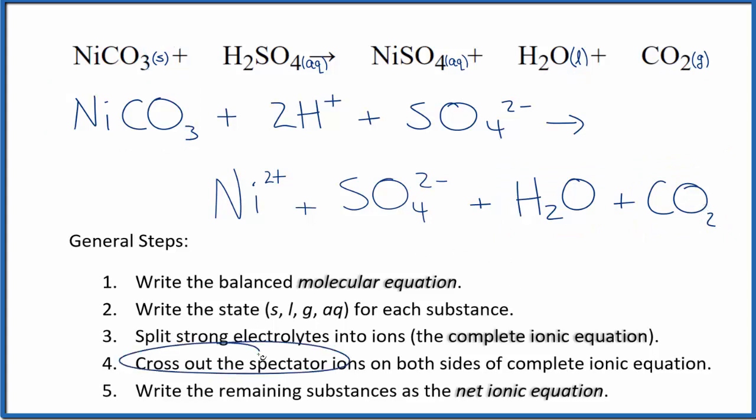Now we can cross out spectator ions. They're on both sides of the complete ionic equation. In the reactants, I see a sulfate ion here, and again, another sulfate ion in the products. So these are spectator ions. We're going to cross those out.